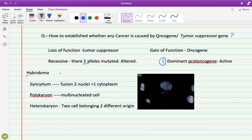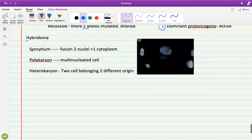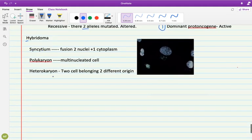Hybridoma, as the name indicates, is basically a fusion. There are three different kinds of fusions. Number one is syncytium formation. Syncytium is basically the fusion of two nuclei together under one roof. This one roof is a cell membrane, and the fusion of two cells together is syncytium formation.